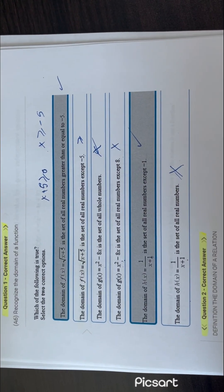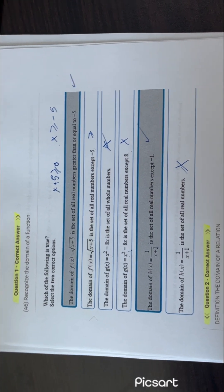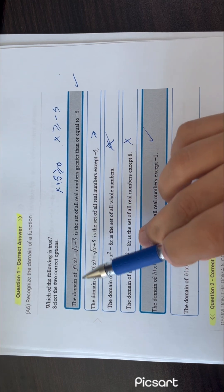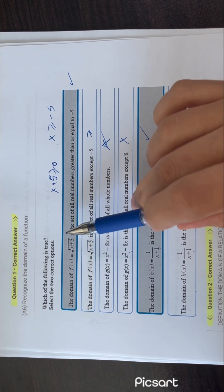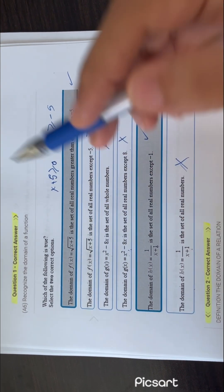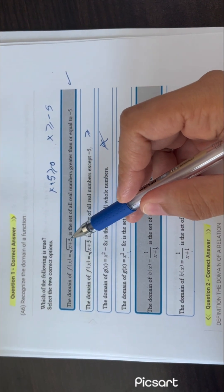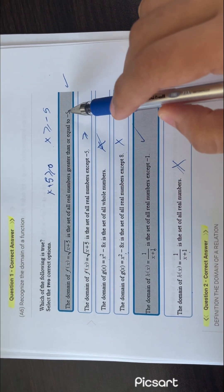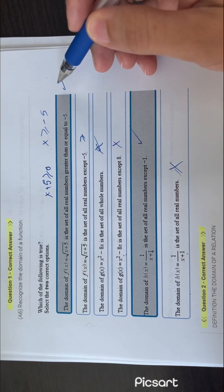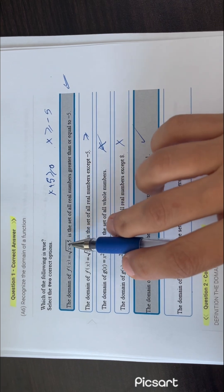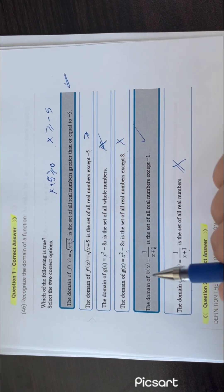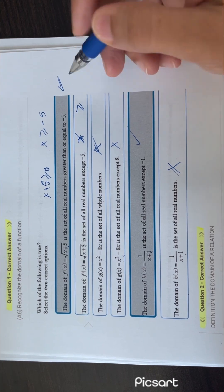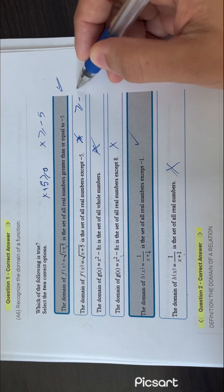I will go through questions in 1.1 very fast. The first question: this one is correct because under the radical, to be defined, this has to be greater than or equal to 0. So this is the set of all real numbers greater than or equal to minus 5. This is correct because if there is a negative under the radical it will be undefined. Here, 'except 5' is wrong — it needs to be greater than or equal to minus 5.